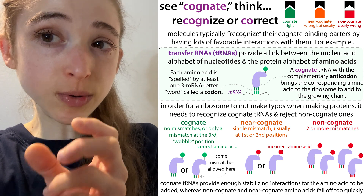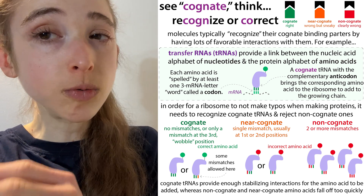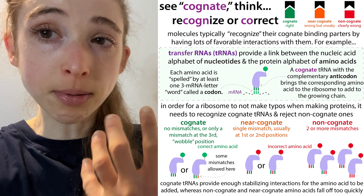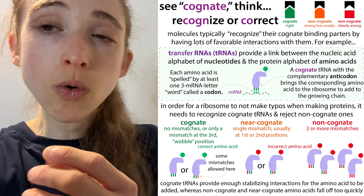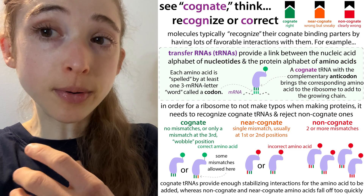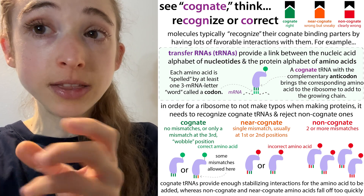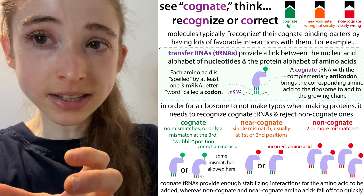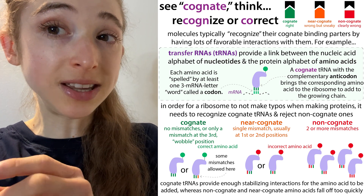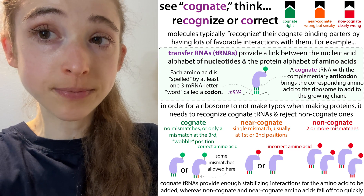So in the case where you have the third position differ but the first two are the same and complementary, or where all three are complementary, both of these would result in the corresponding amino acid being added — the correct one. These would both be cognate. But sometimes what can happen is that you get things that are near-cognate or non-cognate.